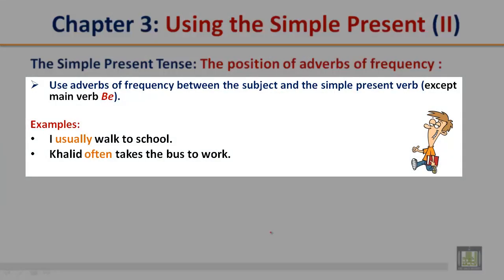The position of adverbs of frequency: use adverbs of frequency between the subject and the simple present verb, except the main verb 'be'. For example: I usually walk to school. Khaled often takes the bus — 'often' is the frequency adverb, 'Khaled' is the subject, and 'takes' is the verb.